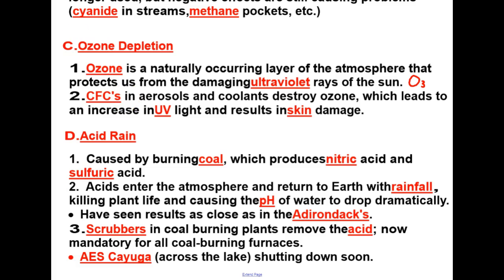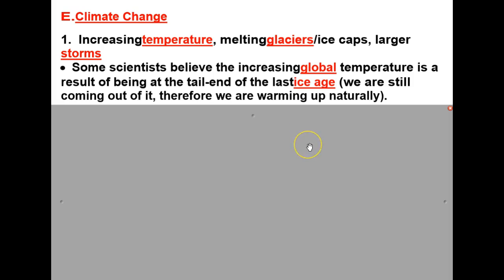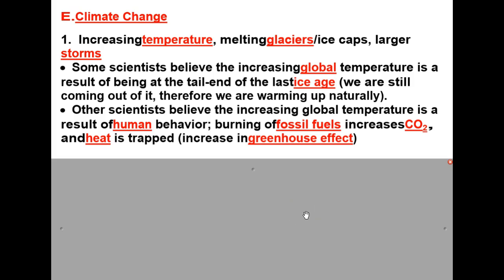Let's take a look at the negative impact of human activity with regard to climate change. Climate change is an increasing temperature resulting in melting glaciers, ice caps, and larger storms. Some scientists believe the increasing global temperature is just a result of being at the tail end of the last ice age — that we are still warming up naturally. Other scientists believe the increased global temperature results from human behavior: burning fossil fuels increases carbon dioxide, and that heat is trapped due to a greenhouse effect.